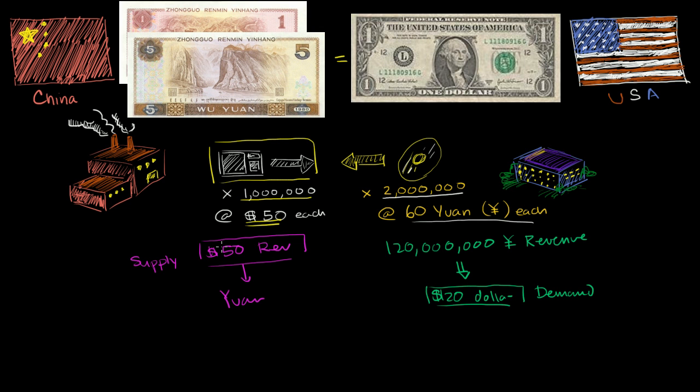Now, clearly, there is an imbalance. The supply of dollars is much larger than the demand for dollars in this situation. And any time the supply for anything is larger than the demand, if the supply is larger than demand, then that means that the price must go down.